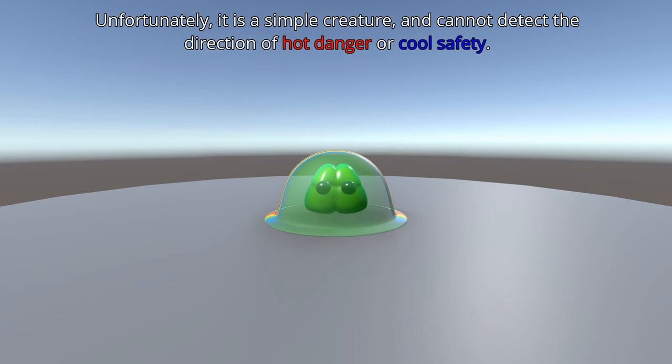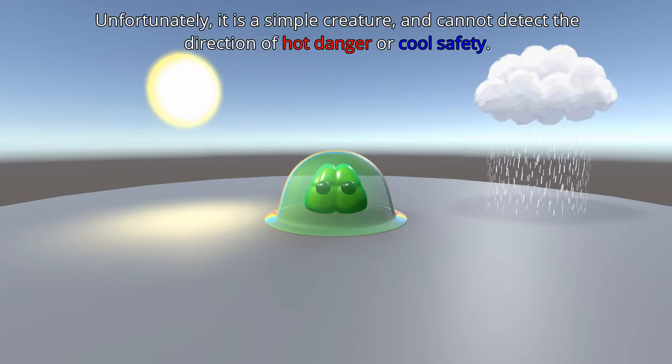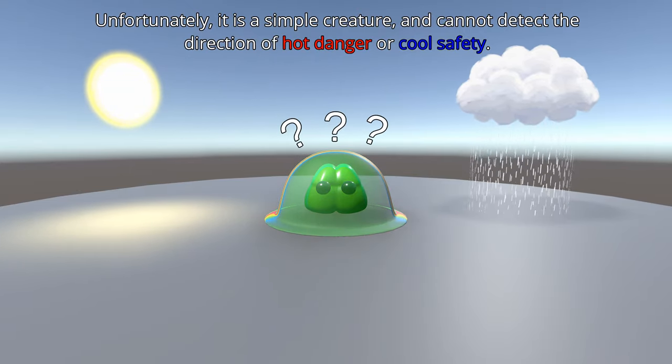Unfortunately, it is a very simple creature. It has extremely simple sensory organs, it does not have complex neural architecture, and that means it actually cannot detect the direction of hot danger or cool safety. The slime can know if its own body is hot or dry or cool or moist, but it does not have the ability to know what direction to go if it wants to become cool. It just cannot sense that.